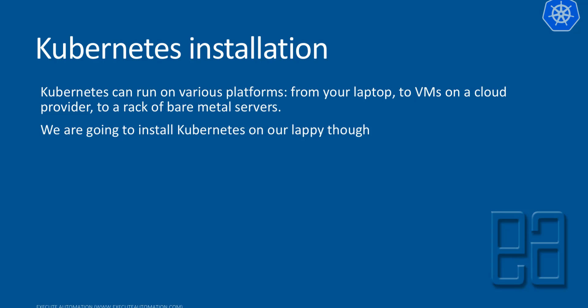Kubernetes can run on various different platforms, from your laptop to a VM on a cloud provider to a rack of bare metal servers. We are going to install Kubernetes on our laptop, because I don't really have a VM account — something like an Azure, AWS, or Google Cloud account — to install a VM on the cloud and show you how it works. Rather, we are going to go with a very easy and straightforward way by installing Kubernetes on our laptop or any machine that you have, so it's very easy to start working with Kubernetes and see how we can leverage its power for our day-to-day life. It's going to be pretty much exactly the same as how you deploy Kubernetes on a VM on cloud, because what we're going to work with on the laptop is just a replica of how the real-time production environment is going to look like.